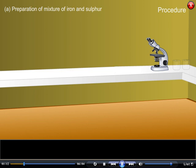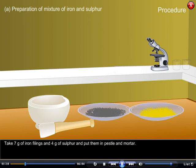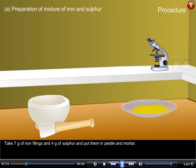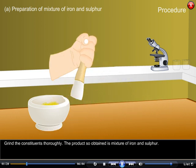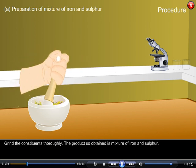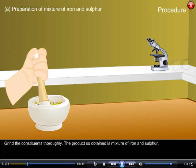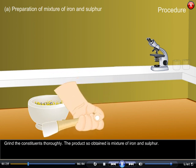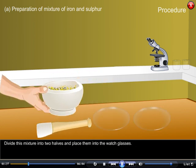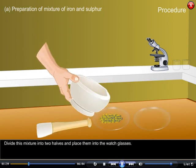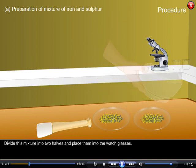Procedure A. Preparation of mixture of iron and sulphur: Take 7 grams of iron filings and 4 grams of sulphur and put them in pestle and mortar. Grind the constituents thoroughly. The product so obtained is a mixture of iron and sulphur. Divide this mixture into two halves and place them into the watch glasses.